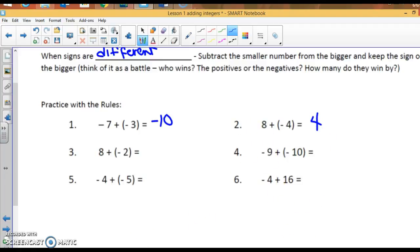8 plus negative 2. They're different, so subtract. You get 6. Take the sign of the larger. It'll be positive 6. Here we go. Negative 9 plus negative 10. They're the same, so add: negative 19. Add and keep the sign.